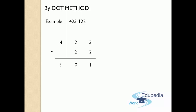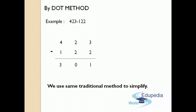Now just write 3 in the answer's place. Therefore, you have got the same answer as in the old-fashioned way. So we use the same traditional method when the digit in the minuend is greater than the digit in the subtrahend. Please do remember this in your mind. Thank you.